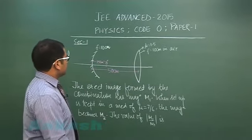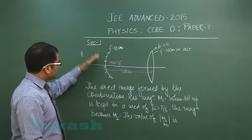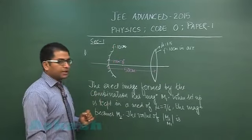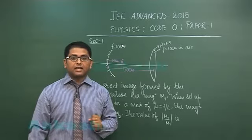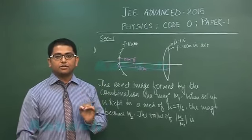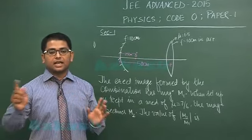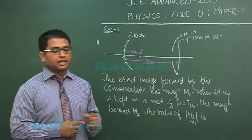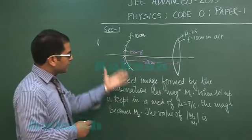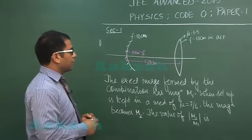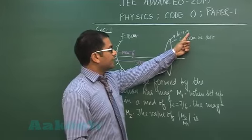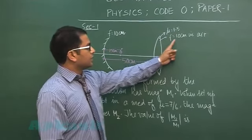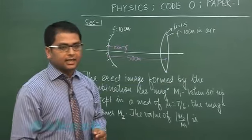The initial questions of Code 0 begin with integer type questions where the answers are numerical values ranging from 0 to 9, both inclusive. The first question is clearly from ray optics where a lens of refractive index 1.5 (glass) has focal length 10 cm in air.